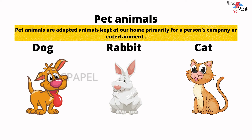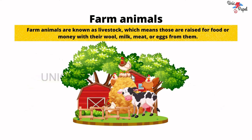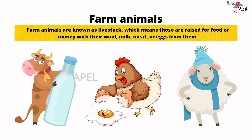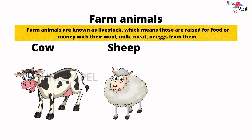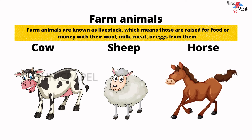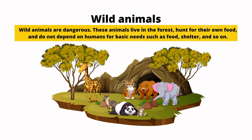Farm animals are known as livestock, which means they are raised for food or money — for their wool, milk, meat, or eggs. Example: cow, sheep, horse, and many more.